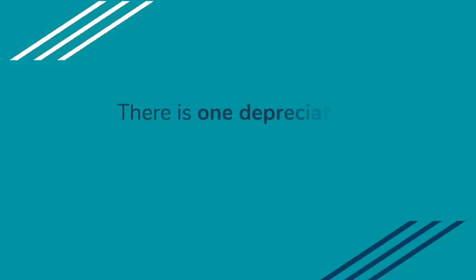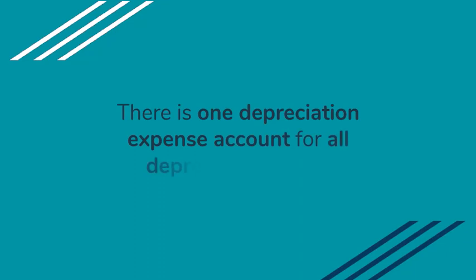Now something that's very important is that there's only one depreciation expense account for all of the depreciable assets. So if we depreciate vehicles we debit depreciation, and if we depreciate equipment we debit depreciation, and this will make sense more towards the end of this video.